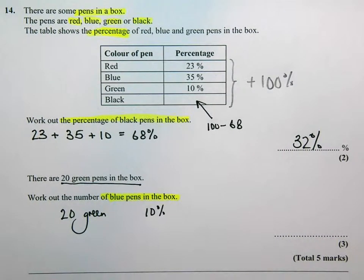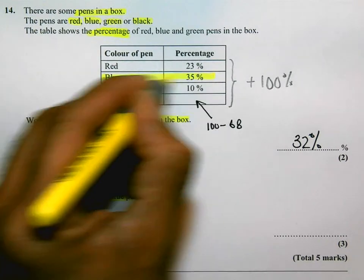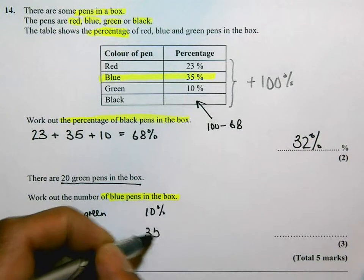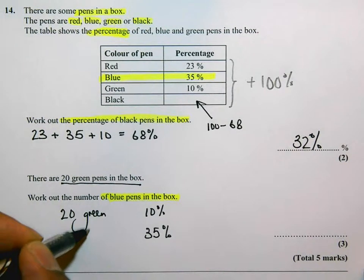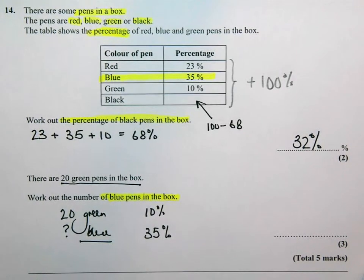Now, to work out the number of blue pens in the box, let's just check. Blue pens, there are 35% of them are blue. Alright, now if 35% are blue, let's figure out how many blue pens there are.